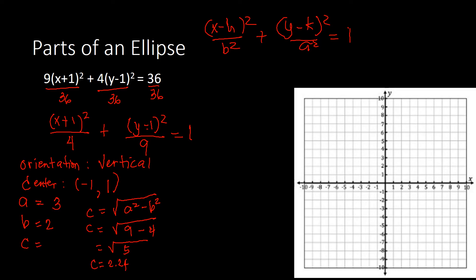Now we identify the different parts. Starting with the vertices: a is 3, so from the center at (negative 1, 1), we count 3 units up and 3 units down since this is vertical orientation. Counting up: 1, 2, 3 — that's one vertex. Counting down: 1, 2, 3 — that's the other vertex. The coordinates are (negative 1, negative 2) and (negative 1, 4).